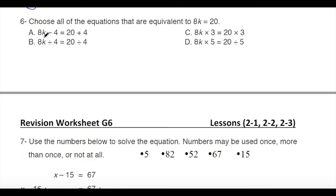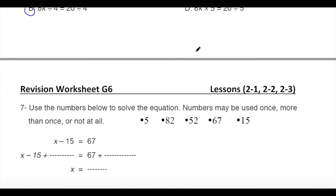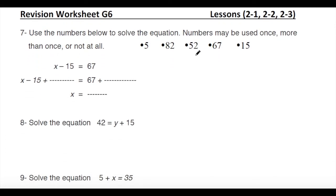For 8k equals 20: the first option subtracts 4 on one side and adds 4 on the other — not valid. The second divides both sides by 4 — valid. The third multiplies both sides by 3 — valid. The fourth multiplies one side by 5 and divides the other by 5 — not valid.